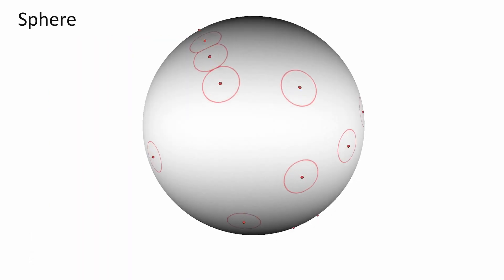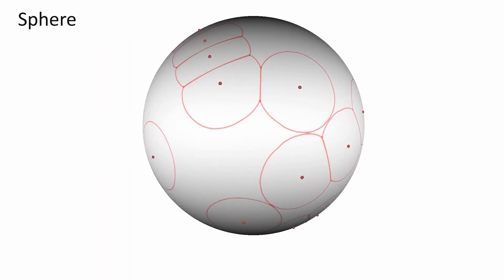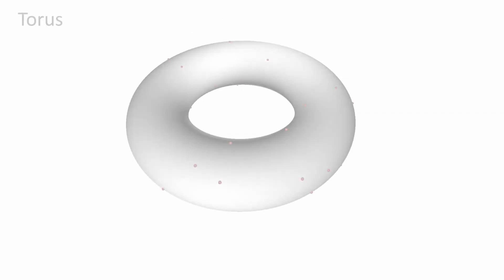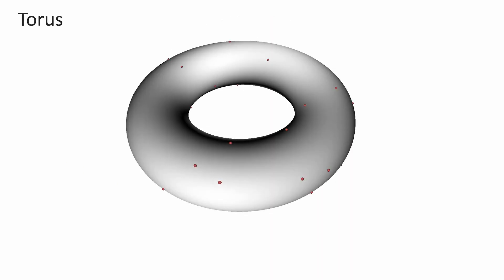Spatial tests on classical surfaces such as the sphere and the torus yield separating arcs as smooth narrow bands which lay on the surface.